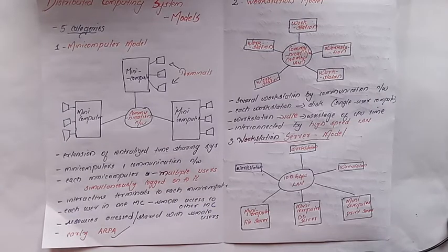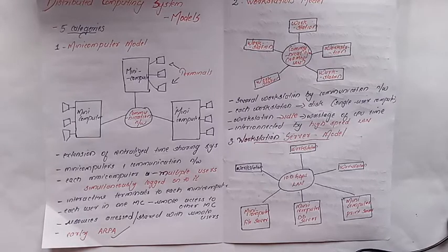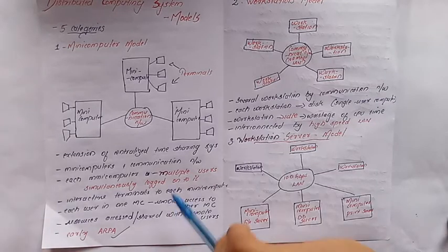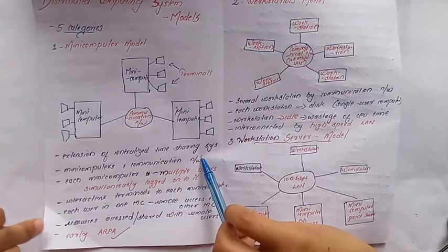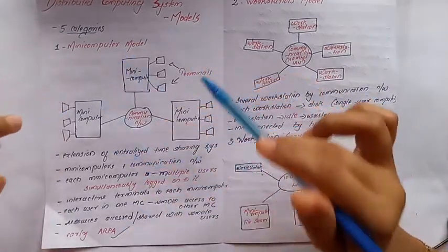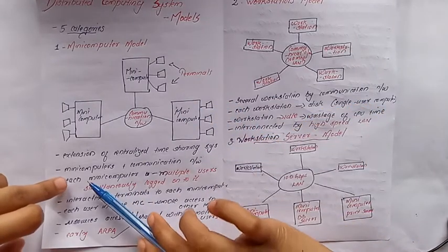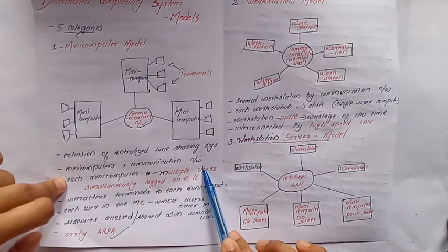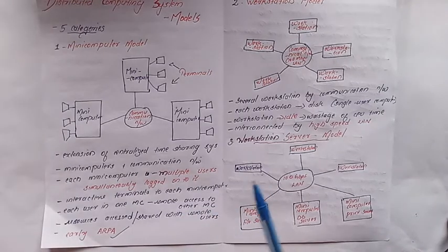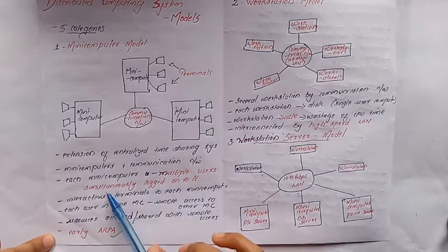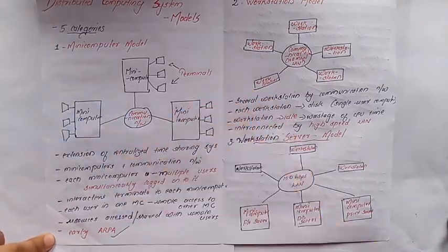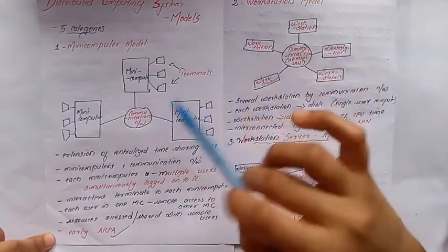In a time sharing system, we have to use a single resource — to use it and release it. In the Mini Computer Model, we have so many mini computers. In one mini computer, multiple users can simultaneously log onto it.